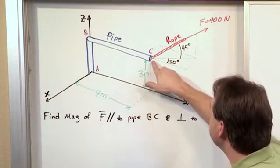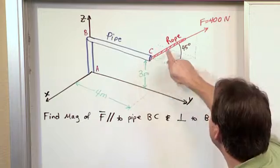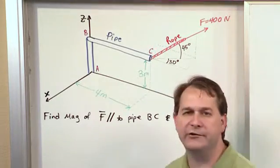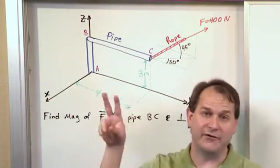And then attached to the end of the pipe, I have a rope that's pulling with a force of 400 newtons off in that direction. Now, what direction is that direction?